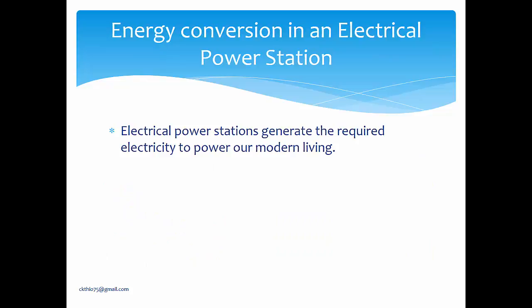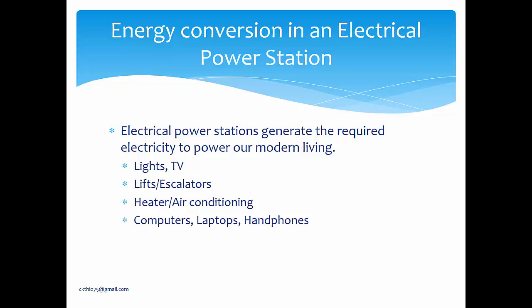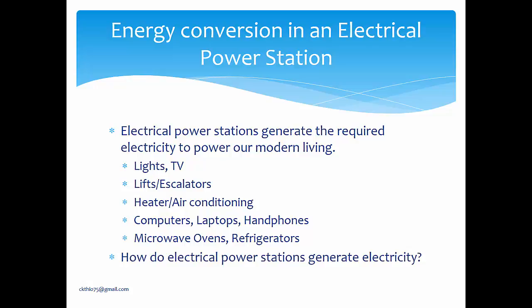Electrical power stations generate the required power for our modern living — we need lights, we turn on the TV, we use escalators and lifts, and we use heaters or air conditioning to regulate temperature. For communication, we use computers, laptops, and phones. For cooking, we use microwave ovens, and we use refrigerators to store food.